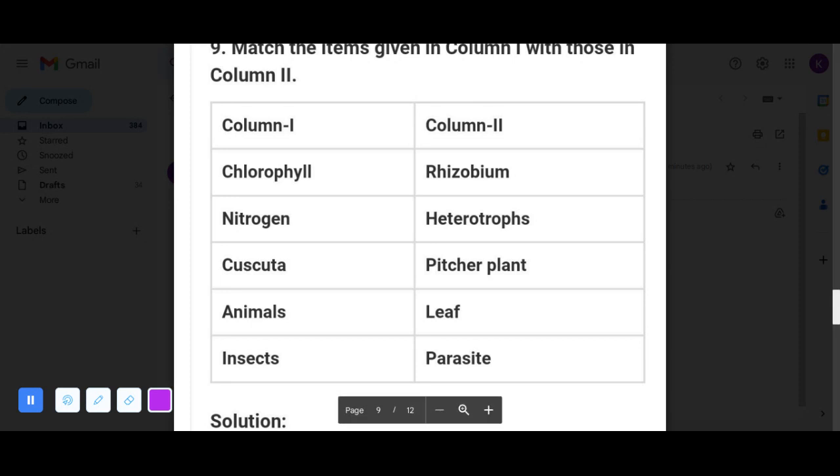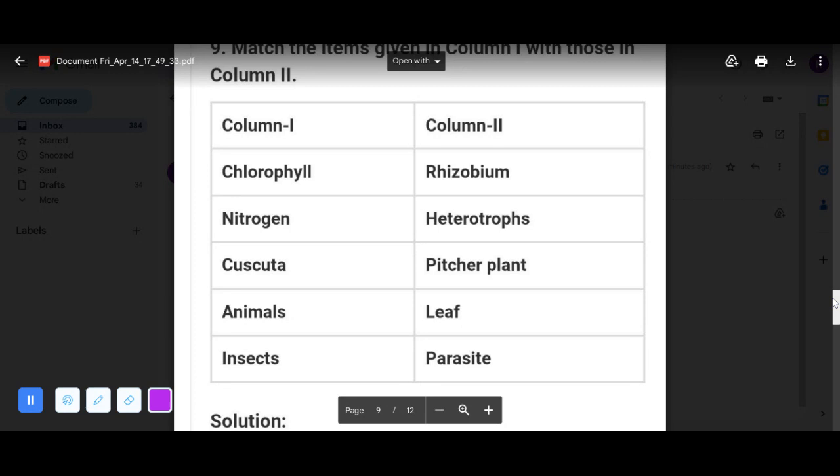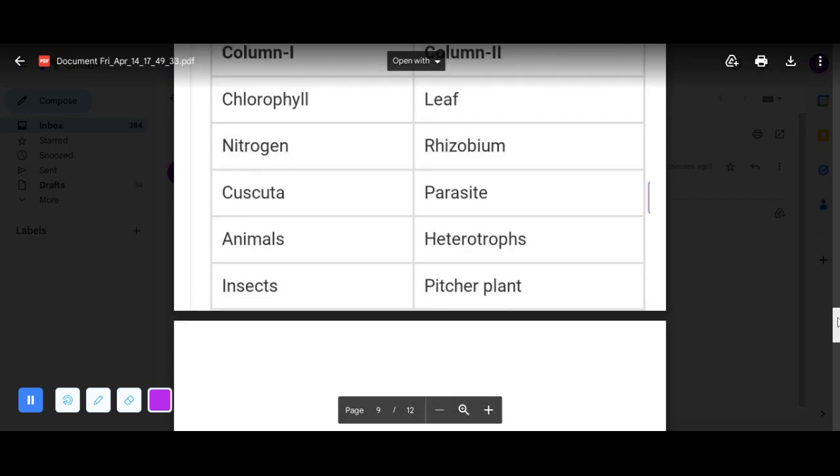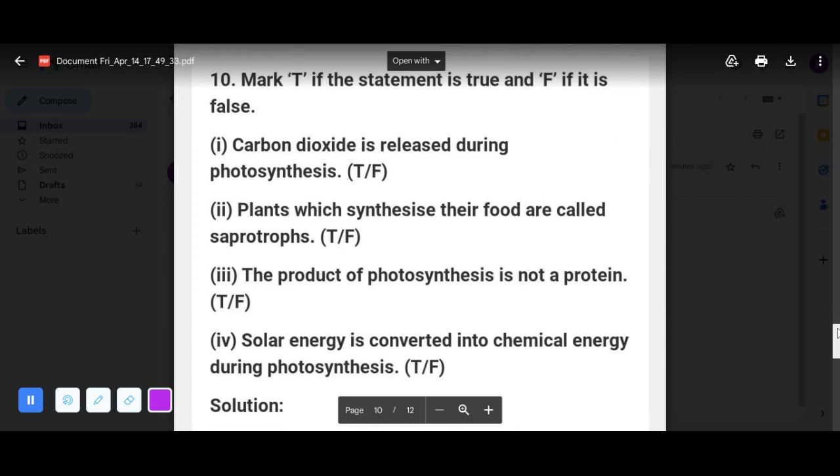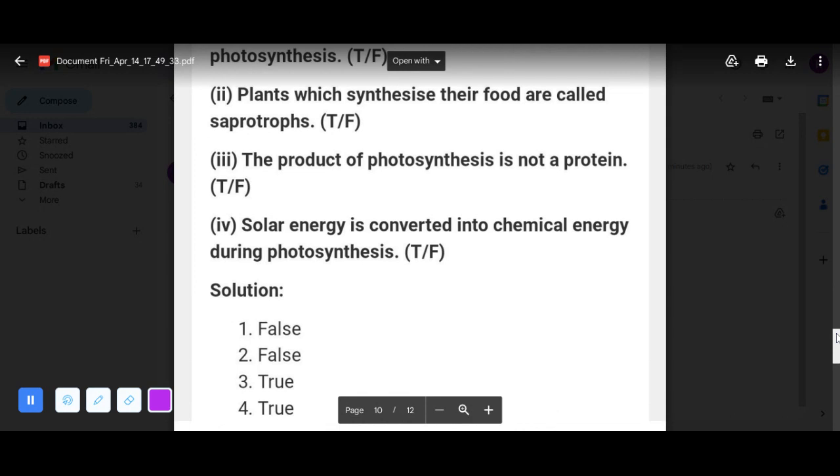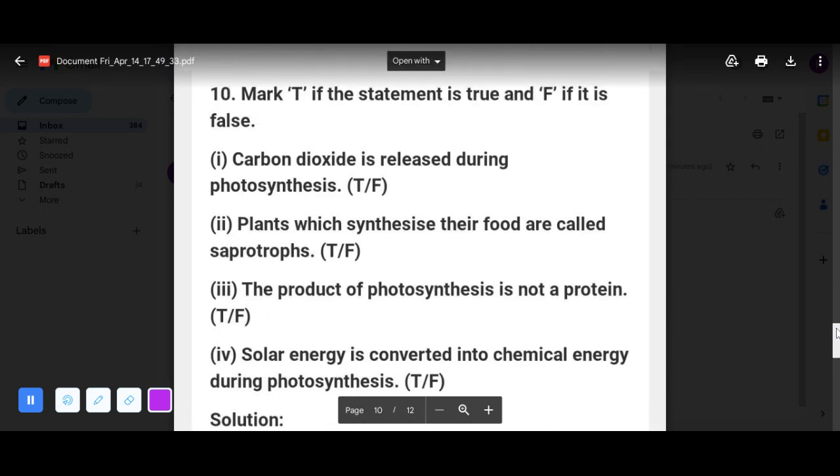Now next, true or false. Carbon dioxide is released during photosynthesis? It is false. Plants which synthesize their food are called saprotrophs? It is false. The product of photosynthesis is not a protein? This is true. Solar energy is converted into chemical energy during photosynthesis? Yes, it is true.